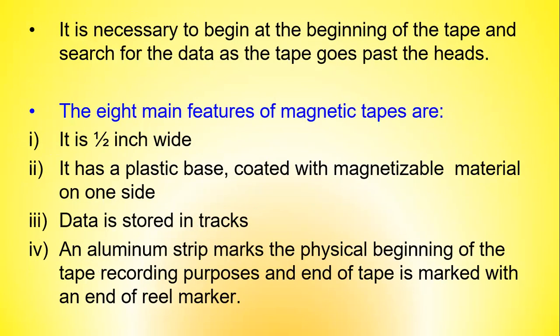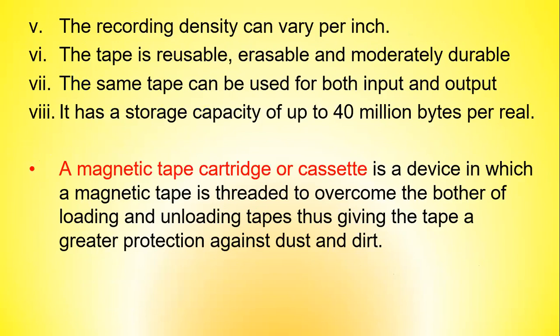It is necessary to begin at the beginning of the tape and search for the data as the tape passes the heads. The eight main features of magnetic tapes are: it is a half inch wide; it has a plastic base coated with magnetizable material on one side; data is stored in tracks; an aluminum strip marks the beginning of the tape and an end-of-reel marker marks the end; recording density can vary per inch; the tape is reusable, erasable, and moderately durable; the same tape can be used for both input and output; and it has a storage capacity of up to 40 million bytes per reel.